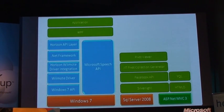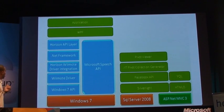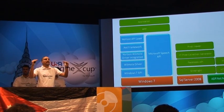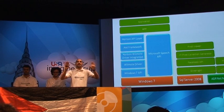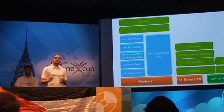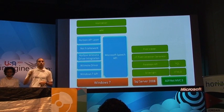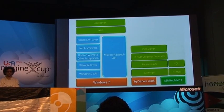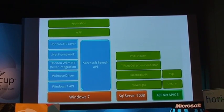The stack is built in a modular sense — we want people to contribute and to try different hardware with our application. We start on a Windows 7 base, utilize the Windows 7 API and the Wiimote driver. We wrote the Horizon Wiimote driver integration layer, enabling more detailed hardware sensing. On top of that is the .NET framework, then the Horizon API layer where other application developers link in, then the WPF front end and user experience layer. We also use the Microsoft Speech API to speed things up — if you say something to the PC, it accelerates input. The App Store runs on SQL Server 2008 and ASP.NET, with Silverlight Facebook API and a just-in-time compiler for Pivot Viewer.